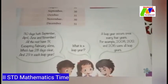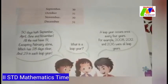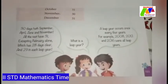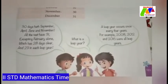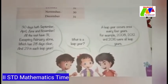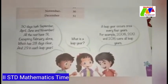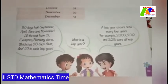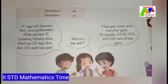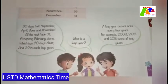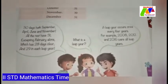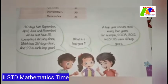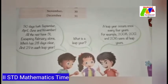Children, do you know what is a leap year? Usually 365 days make a year, but once in 4 years we get 366 days. That year is called a leap year. In that year, February has 29 days.